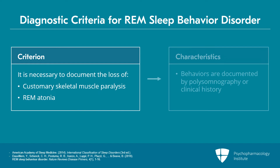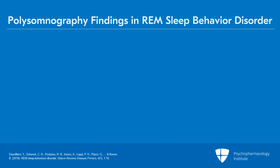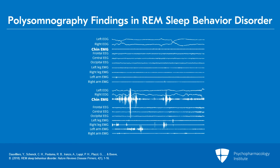These behaviors are documented by polysomnography to occur during REM sleep, or based on clinical history of dream enactment, are presumed to occur during REM sleep. In the figure shown here, in the top panel A, if you look at the third tracing for the chin electromyogram, this is the chin EMG of normal REM sleep, and you will see a flat line indicating muscle atonia.